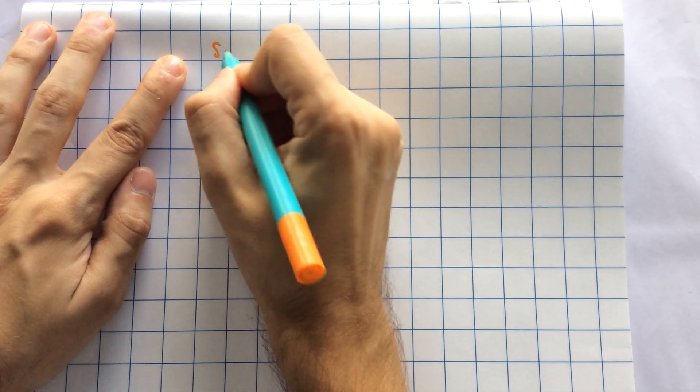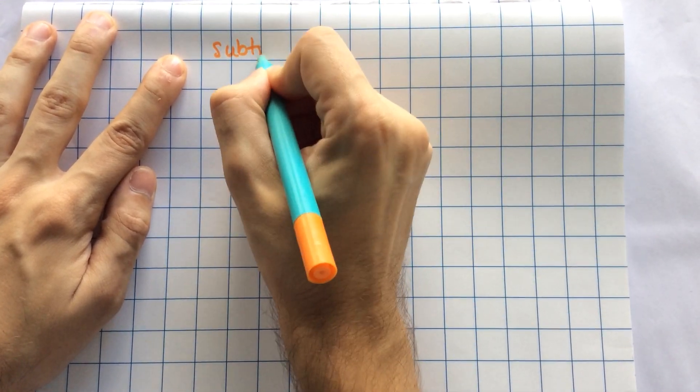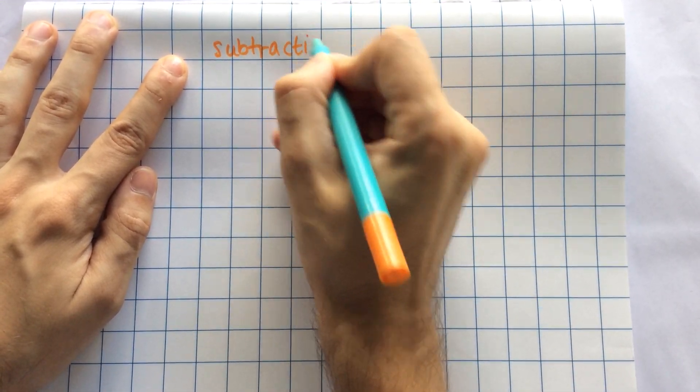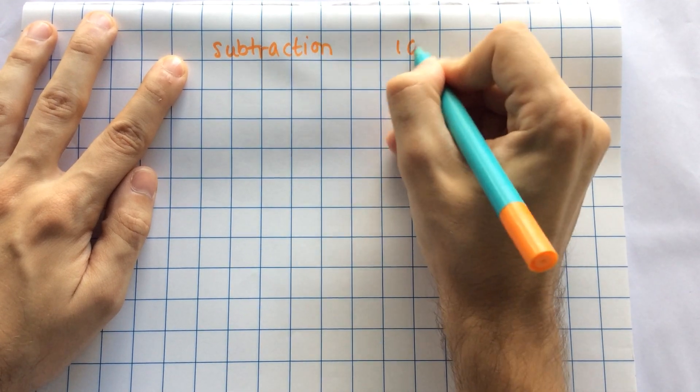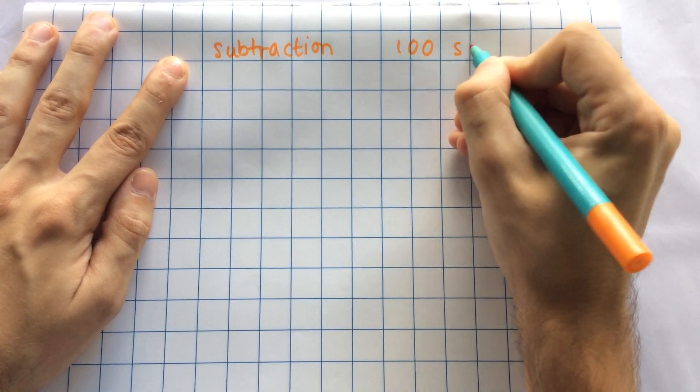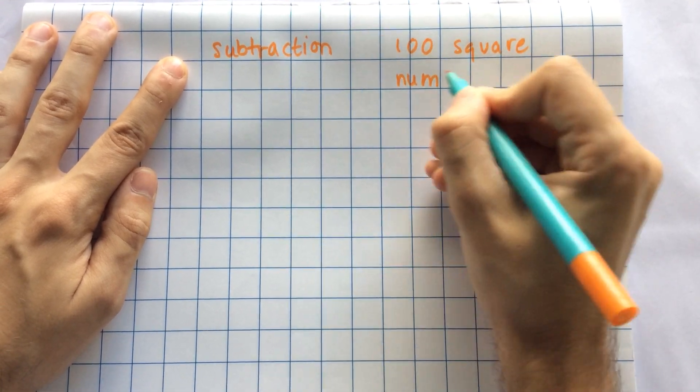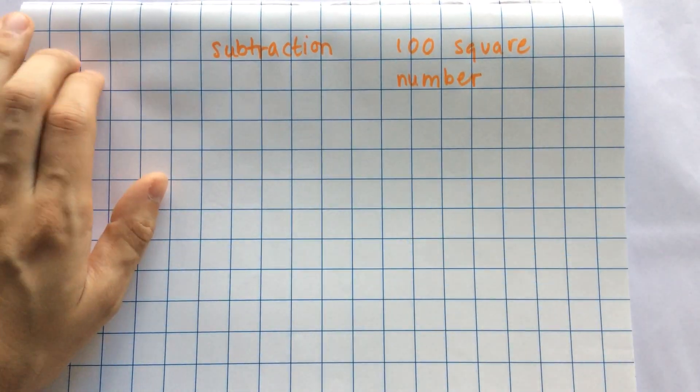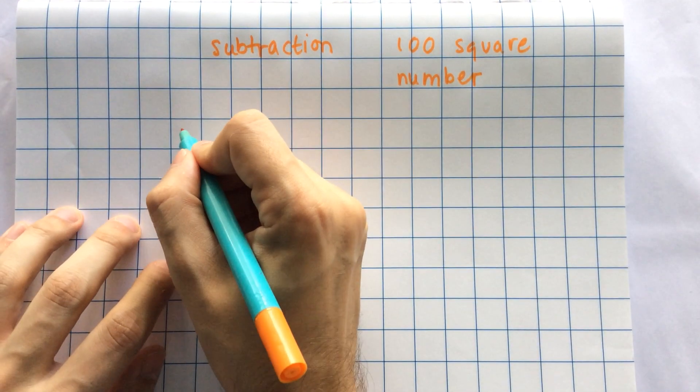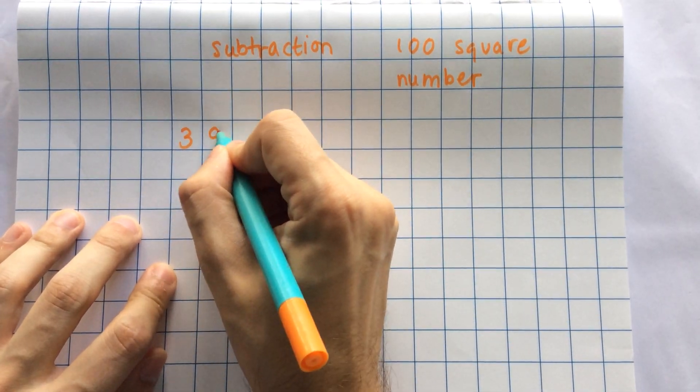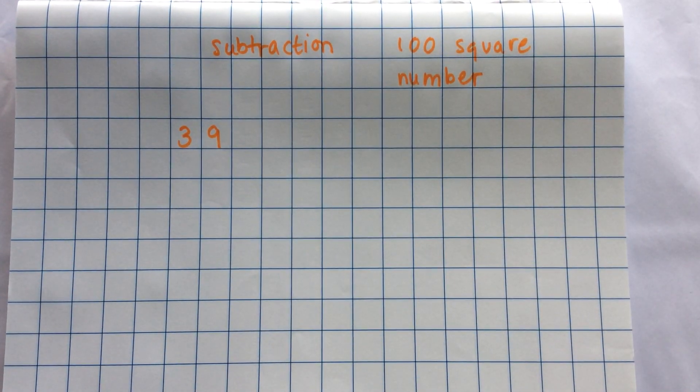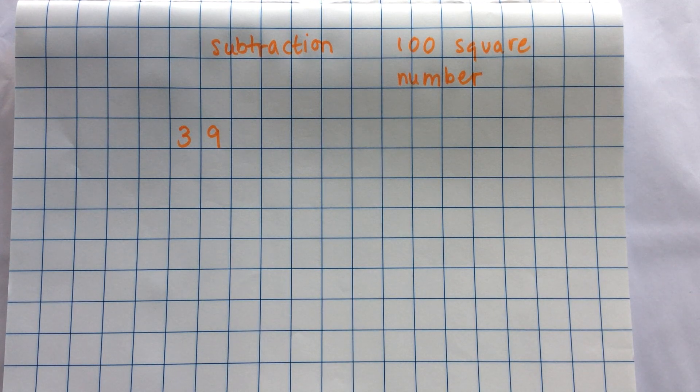Hi everyone. Today in this video I'm going to show you how to solve subtraction problems using a hundred square or a number line. Both of these are really good if you're using larger numbers such as 39 because you don't want to draw 39 things. That would take you far too long.